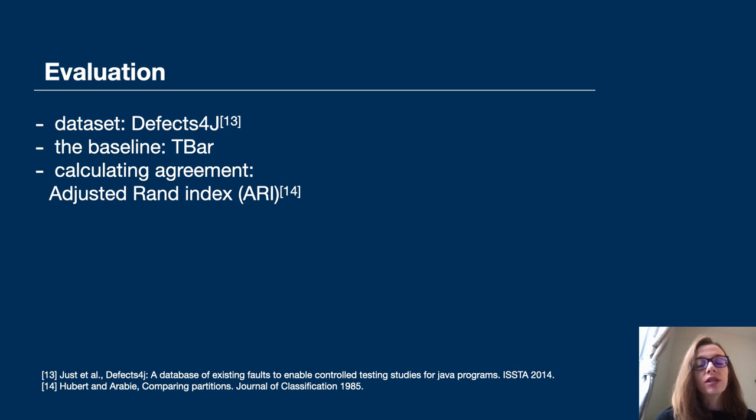In our evaluation, the first step was to generate fix patterns. For that we use a dataset called Defects4J. Defects4J is a popular dataset in APR with 835 bugs and their human-written fixes. As the baseline, we use T-bar. T-bar is an APR tool that applies fix patterns collected from different taxonomies found in the literature. And to calculate agreement between our clusters and the clusters we extracted from the T-bar work, we use adjusted rand index.